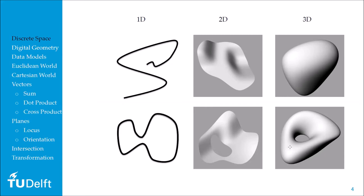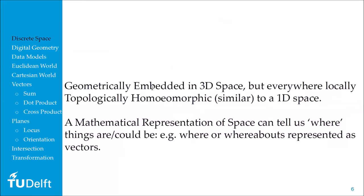This brings us to the concept of boundary representation. We can distinguish objects by their boundaries: the boundary of a three-dimensional object is a two-dimensional surface, the boundaries of a two-dimensional object are one-dimensional curves, and the boundaries of a one-dimensional object, if any, are zero-dimensional points. A manifold object is geometrically embedded in a higher-dimensional space, but everywhere locally it is topologically homeomorphic — or similar — to a lower-dimensional object.